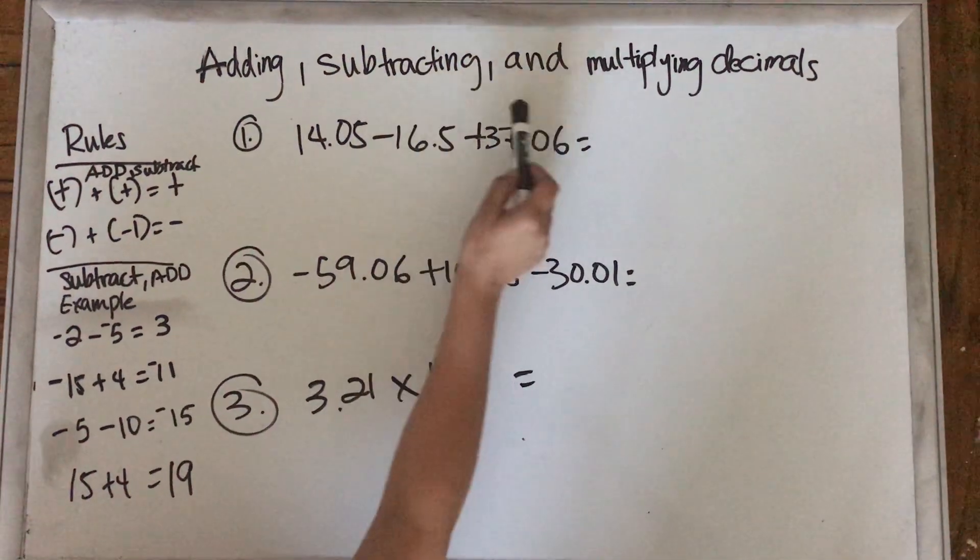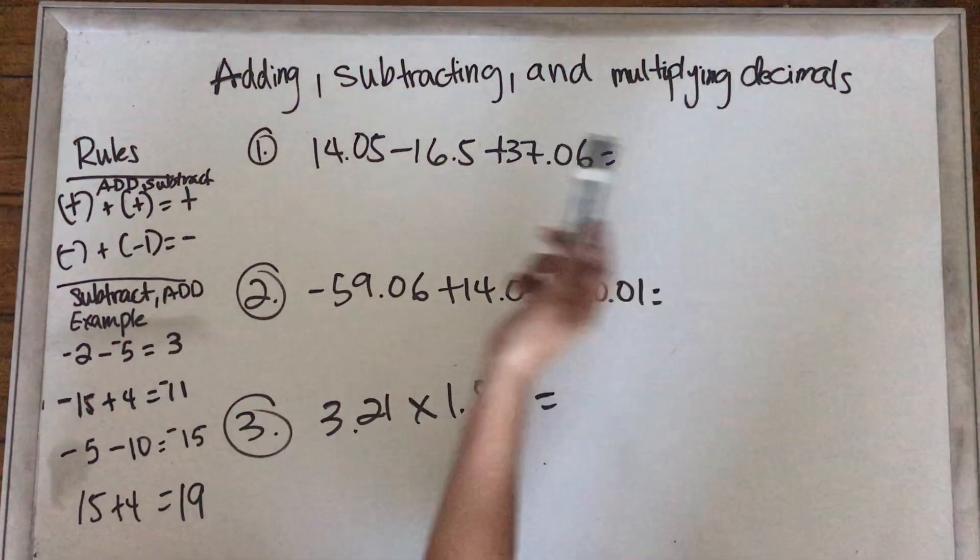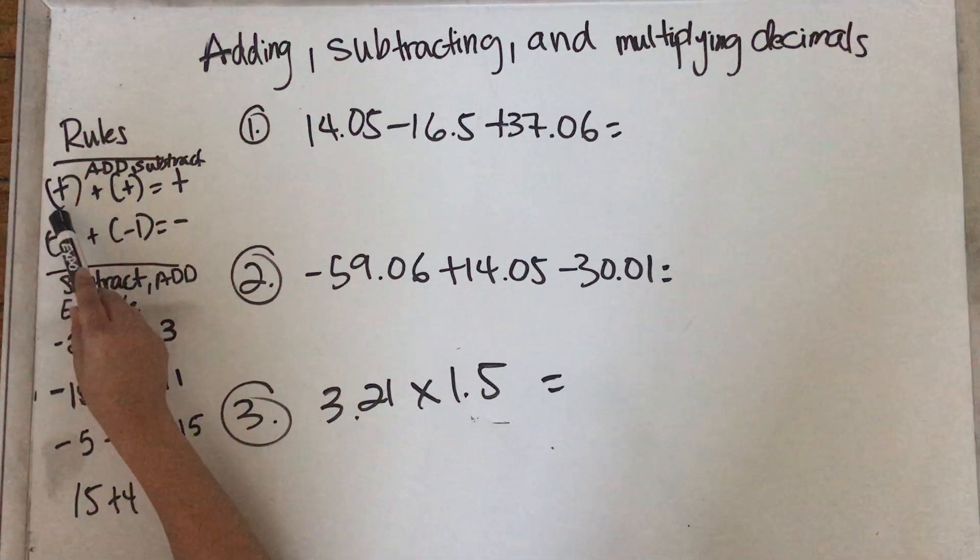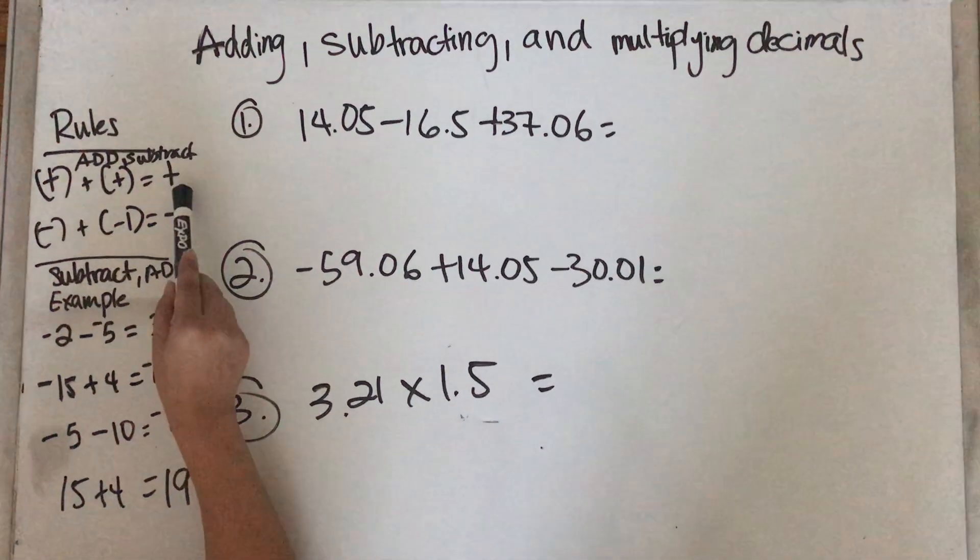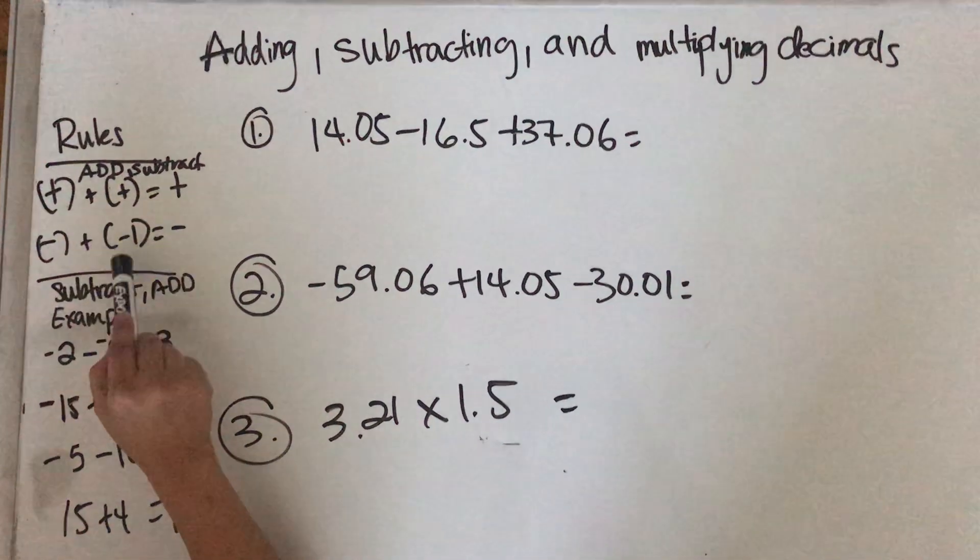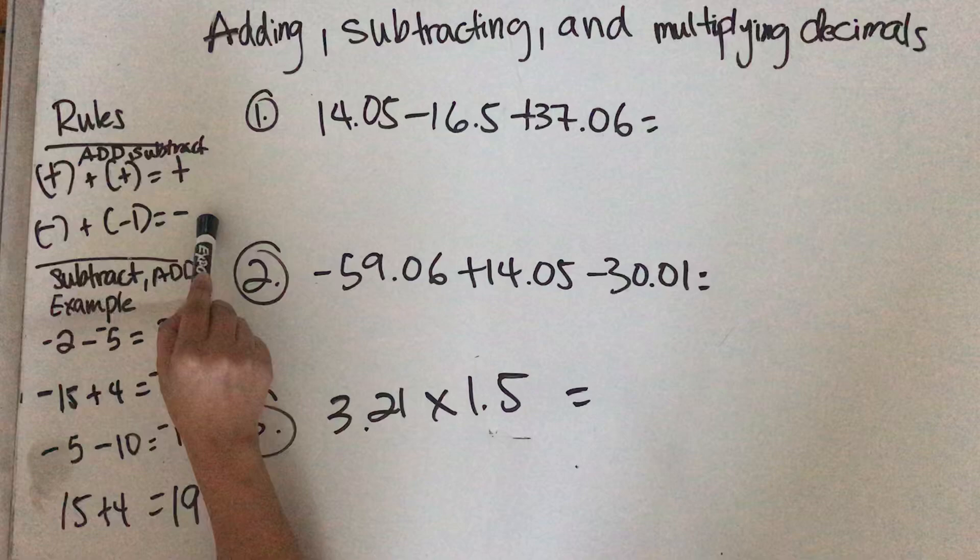Adding, subtracting, and multiplying decimals. There are rules: when you have a positive plus a positive, your answer should be positive. If you have a negative plus a negative, your answer should be negative.